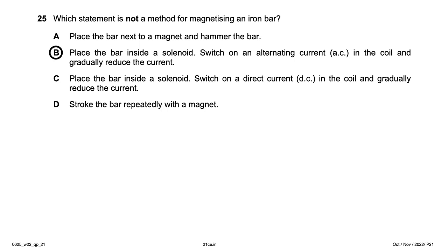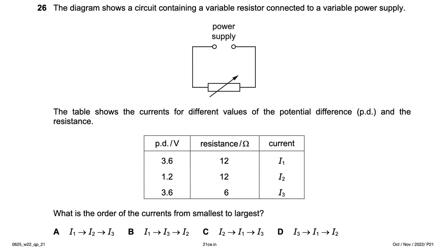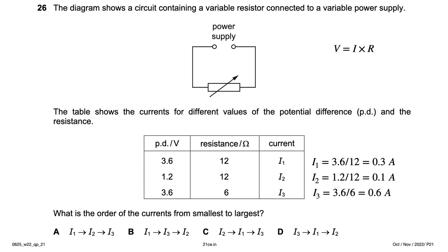A circuit contains a variable resistor connected to a variable power supply. The table shows current for different values of voltage and resistance. Using I = V/R, we calculate: I₂ is smallest, I₁ is next, and I₃ is largest. Order from smallest to largest: I₂, I₁, I₃ — option C.